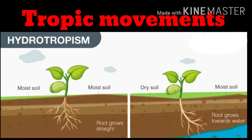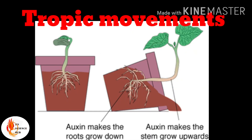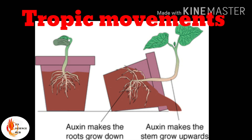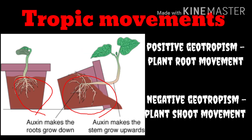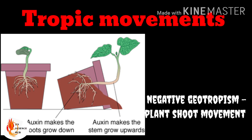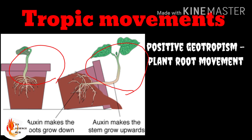Roots absorb water and grow towards where plenty of water is present — this is known as positive hydrotropism. Positive chemotropism means the growth of the pollen tube towards the ovule. In an experiment with two similar pots — one kept vertical and the other toppled down — after several days, the root grows towards the ground in both pots, confirming positive geotropism in roots and negative geotropism in shoots.